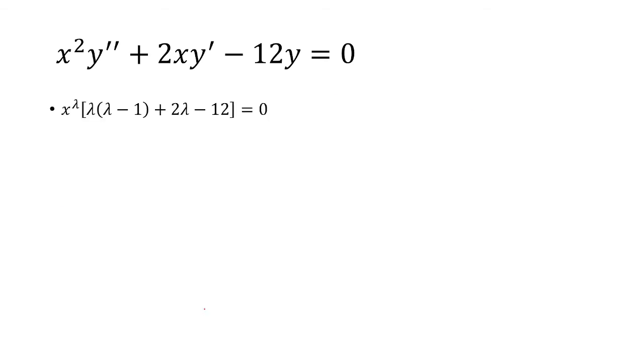Now the goal is to solve for lambda. We know that x to lambda is never equal to 0 if x is not equal to 0. So there's no lambda that exists that will make this equal to 0. So we will ignore x to lambda, and now we just need to focus on the inside.